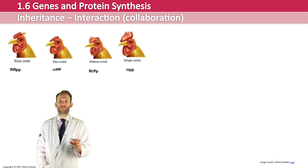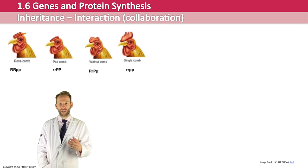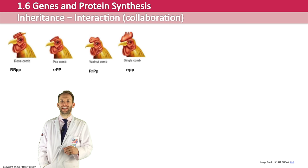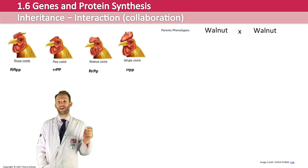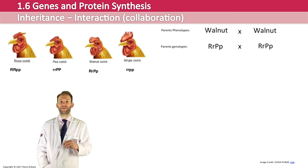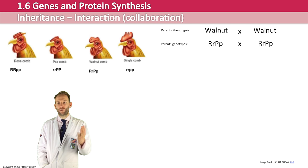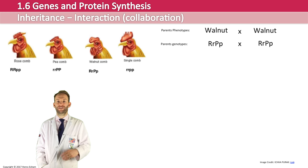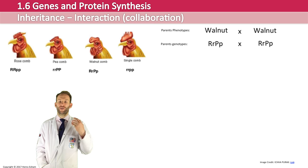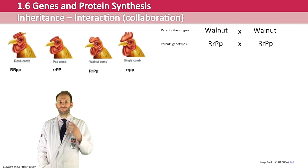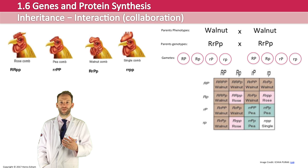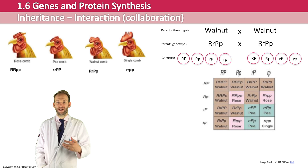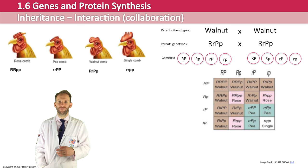For example, the phenotype 'walnut' — a particular shape of the crest — is coded for by heterozygous individuals: big R, little r, big P, little p. We've got the four different gametes associated with heterozygous individuals. We're going to put them into our classic four-by-four Punnett square, and we get our nine to three to three to one ratio at the end.